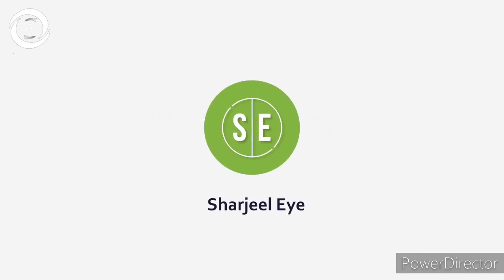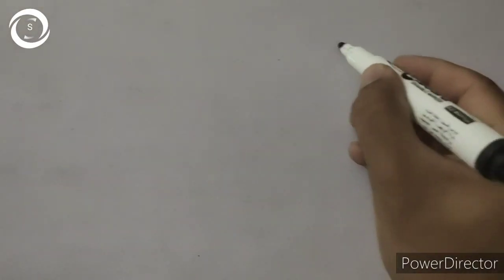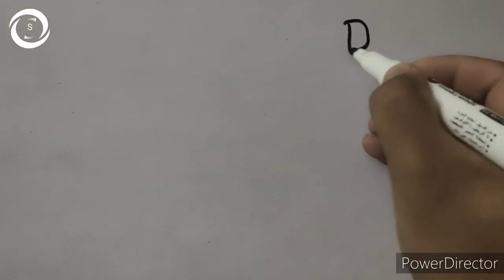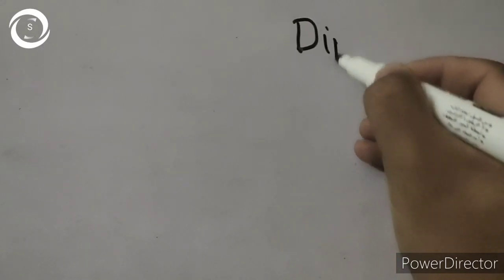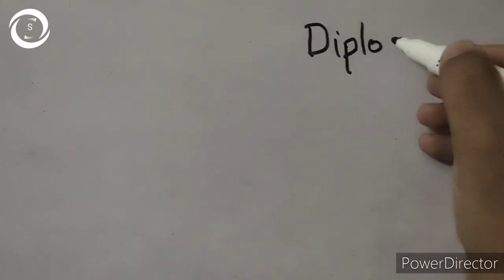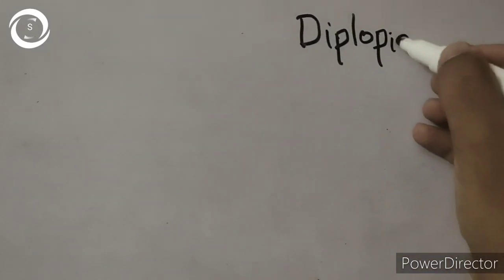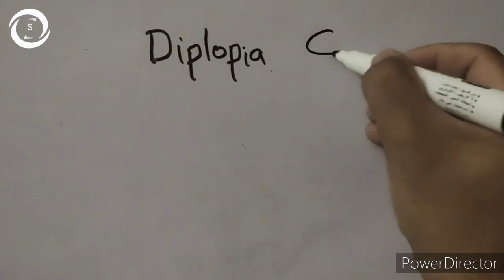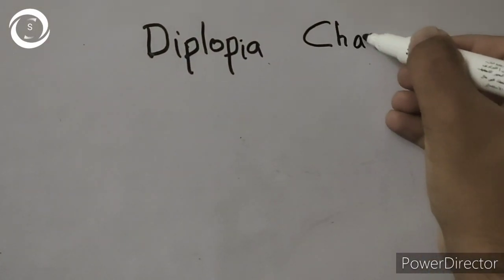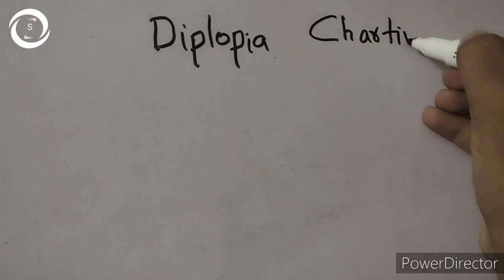At the end, now in this video I will show you how to plot diplopia, how to make a diplopia chart. Now diplopia chart is the record of images of an object seen by the patient, mostly of squint paralytic squint patient, in nine positions of gaze.